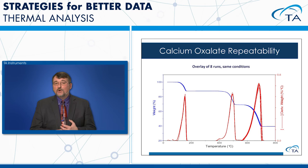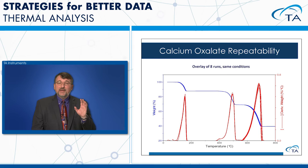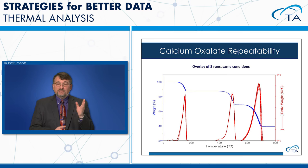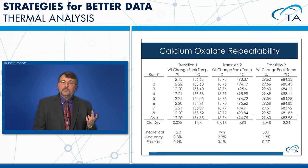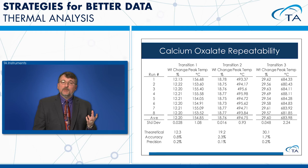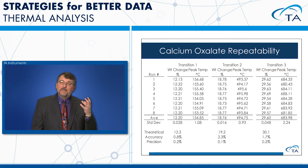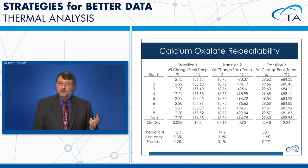On TGA, using calcium oxalate requires repeatability rather than precision since a fresh sample must be loaded each time. Eight runs overlaid show very good agreement, laying on top of each other well. The average and standard deviation of the weight loss steps confirm excellent repeatability. Calcium oxalate is not a calibration standard, but it's a good instrument check — confirming you get the expected weight loss for each step and consistent repeatability.